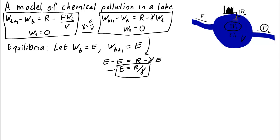Or if you like to write the equilibrium in terms of the original parameters, we would get that e equals r divided by gamma, which is f divided by v, so the equilibrium is r times v over f.